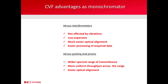If we compare a CVF with gratings and prisms type monochromators, with CVFs we can usually attain a larger spectral range of transmittance. It can be more uniform throughput across the range. And again, like with interferometers, they are easier to align optically in the system.